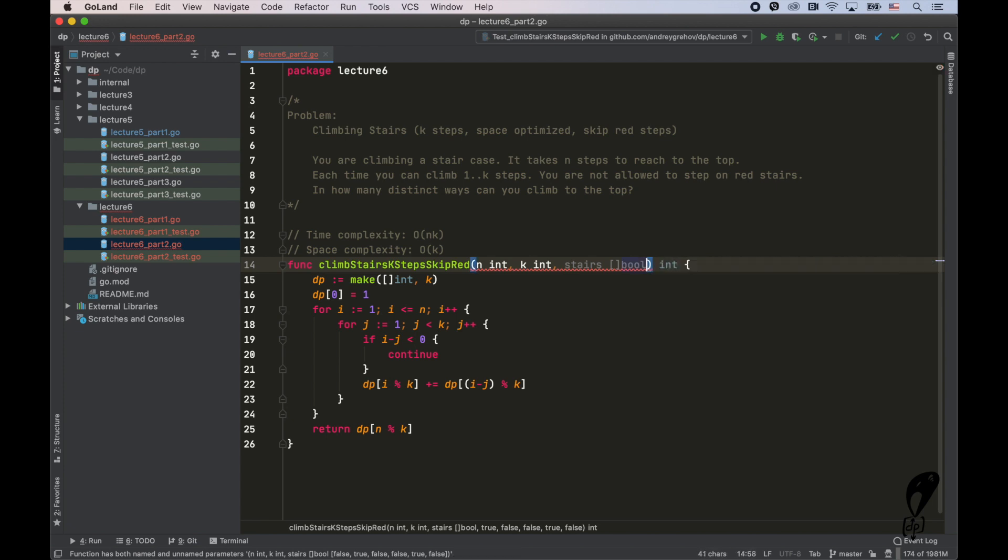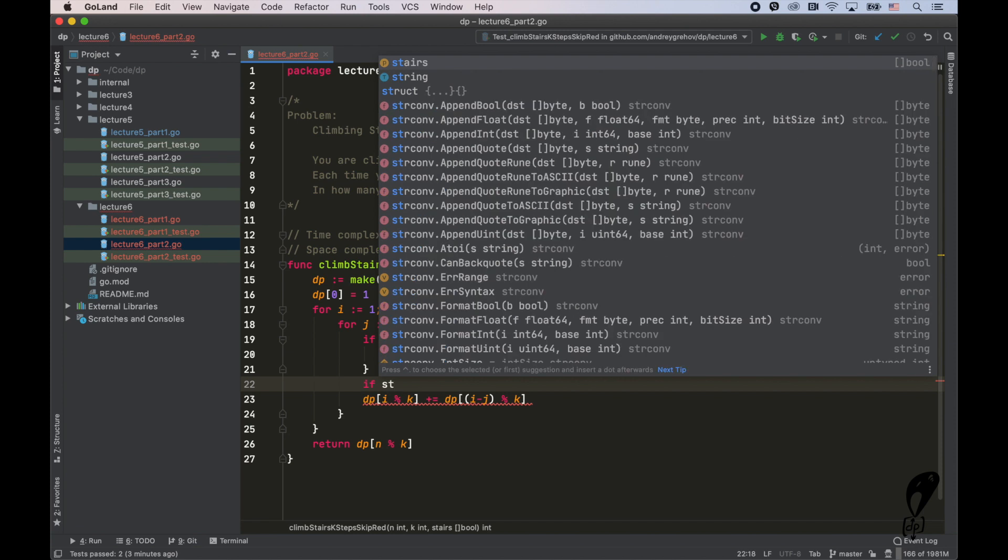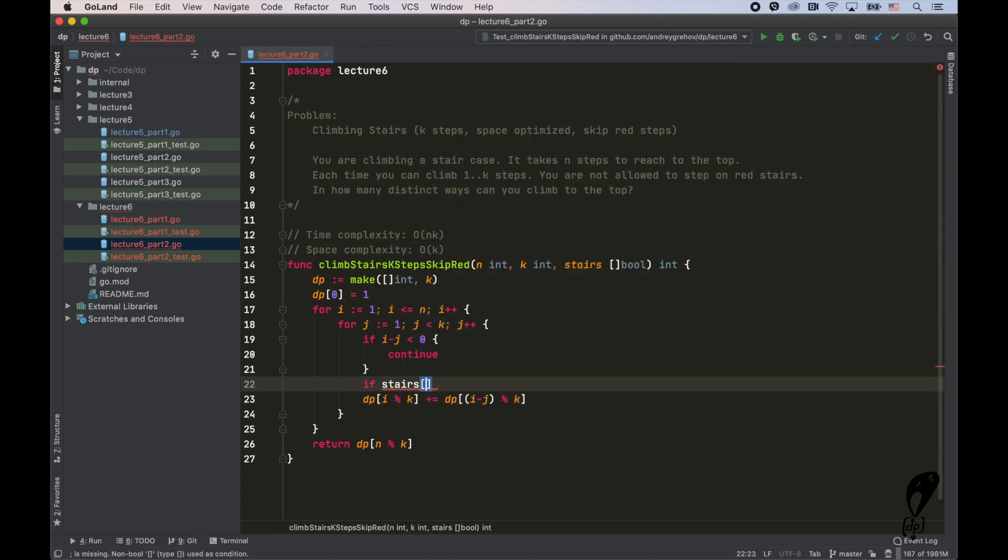And as we've just seen on the whiteboard, every time we reach the red stair, we want to mark it as zero, sort of speaking that solution to reach the red stair is zero because there is no way to get to the red stair. So we can represent it in code as just by checking if the current stair is red, then DP of I mod K is zero. Otherwise we do everything as before. And that's pretty much it. We now skip red stairs and we don't count them.